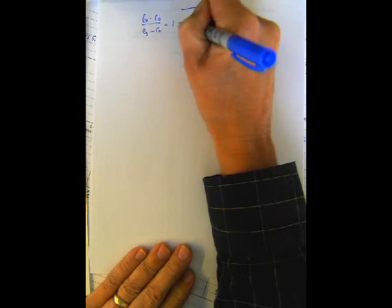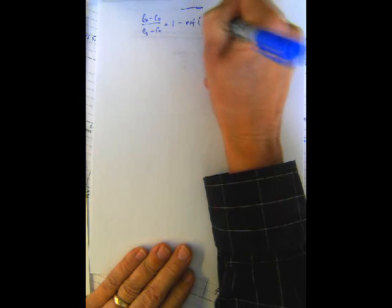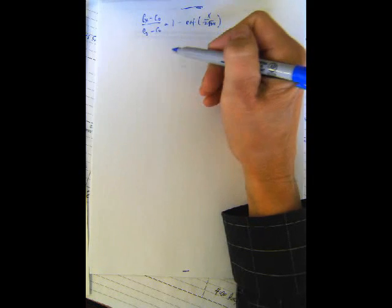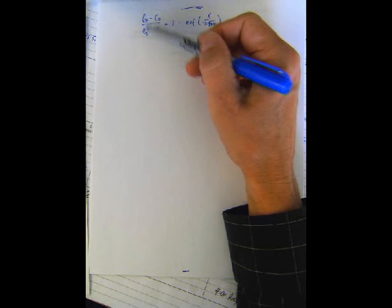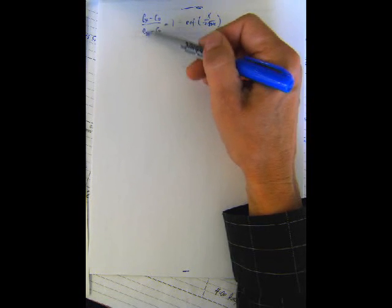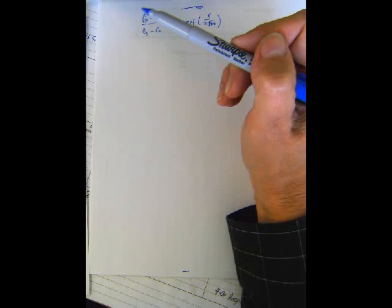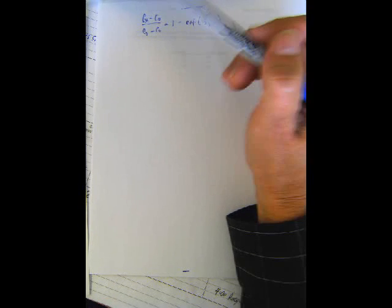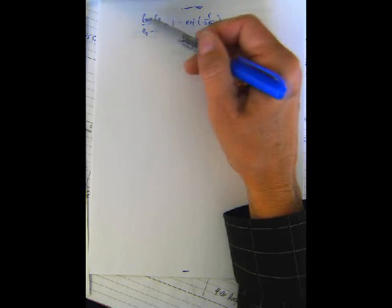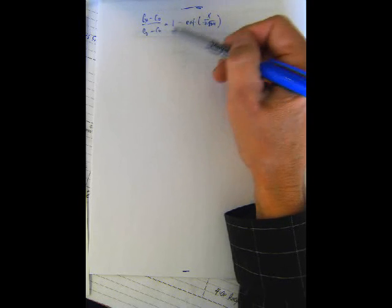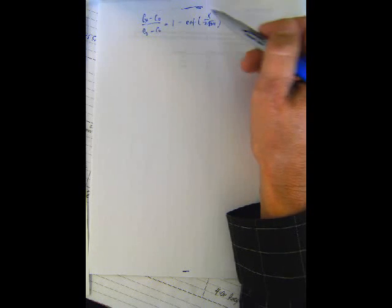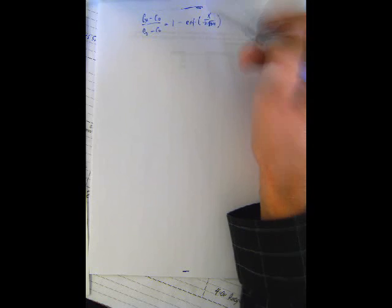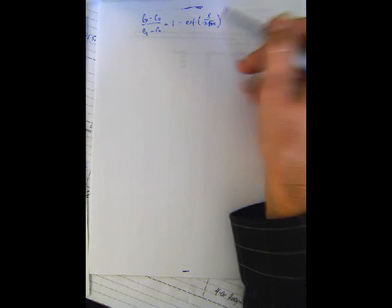We begin with the second law equation. We want to consider the situation where we have an existing process that's running. And that existing process uses a particular raw material in a particular environment that gives me a certain surface concentration. And it produces a certain product concentration at some desired depth. Now, all of the concentration information is on the left side of this equation and there's nothing in here that's related to concentration.